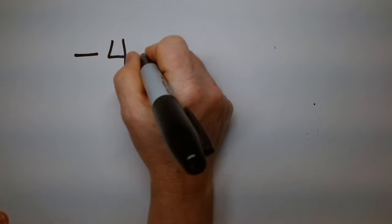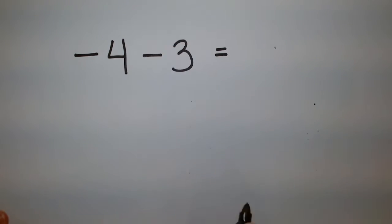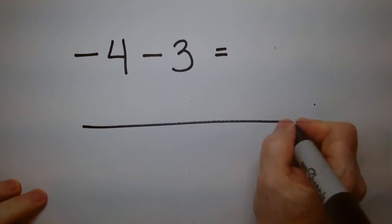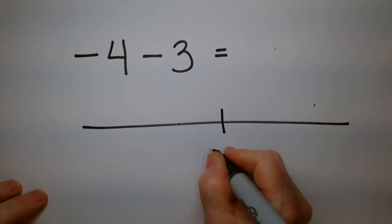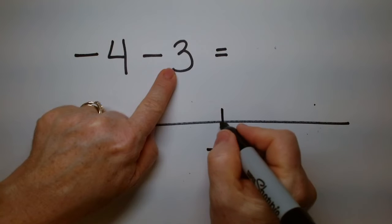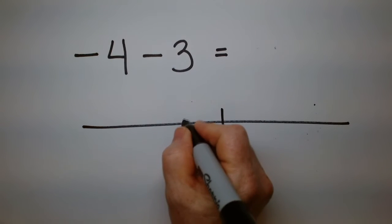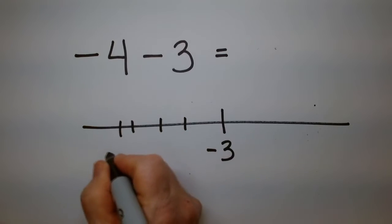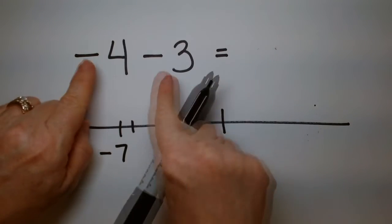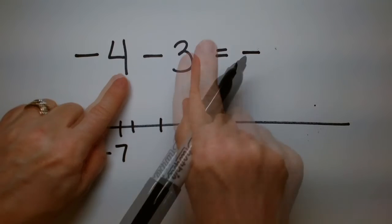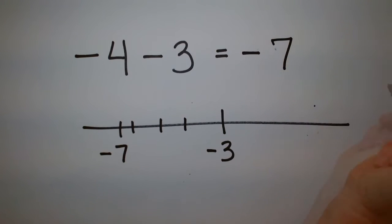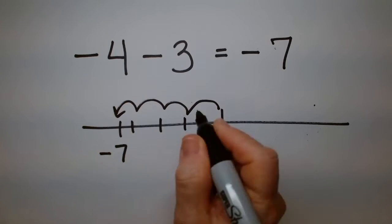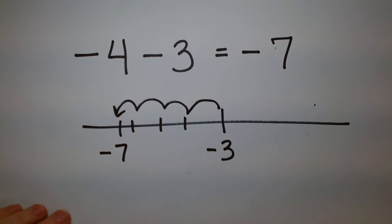What if I have minus 4 minus 3? Notice the signs are the same. That means we were at minus 3, and now we're going to go minus 4 more — the number becomes more negative. So the answer is still negative, and it's going to be 4 plus 3, which is 7. We go 4 hops from minus 3 to minus 7.